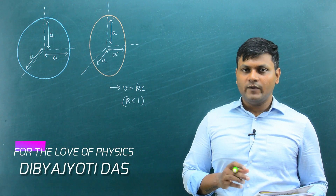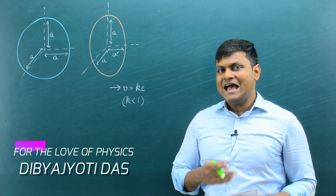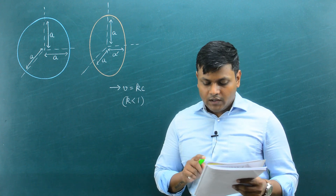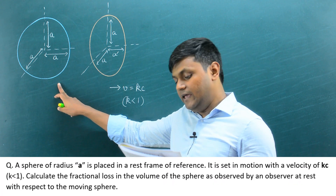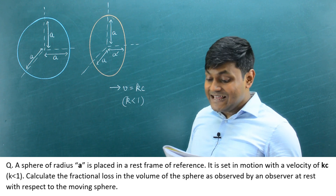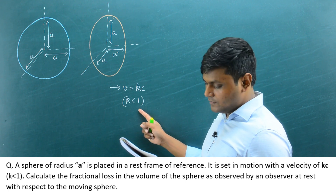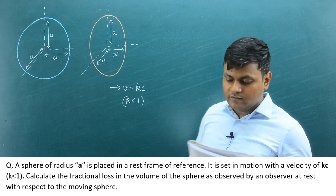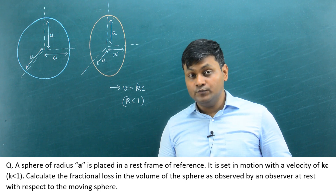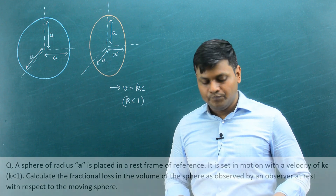I received a question from one of my students based on volume contraction as an effect of relativistic velocities. It goes something like this: a sphere of radius a is placed in a rest frame of reference; it is set in motion with a velocity of kc, where k is less than 1. Calculate the percentage loss in volume of the sphere as observed by an observer at rest with respect to the moving sphere.